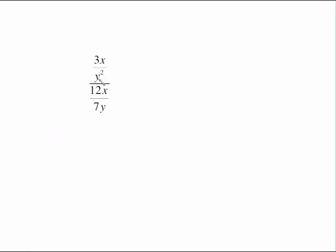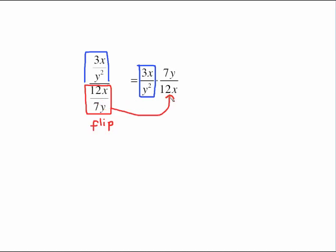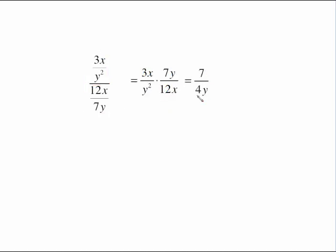Another simple example is monomial over monomial. We're going to take the bottom fraction and flip it upside down. Here's the top fraction remaining unchanged. The bottom fraction we are flipping upside down. Because it's monomial over monomial, we can reduce individually: x cancels out with x, three goes into twelve four times, and with y over y squared, use your exponent laws — there are more y's in the bottom, so that y cancels out, leaving just seven over four y.